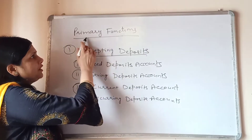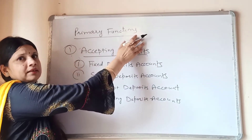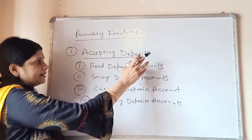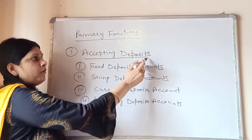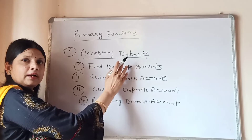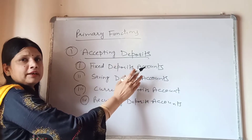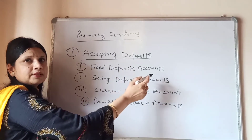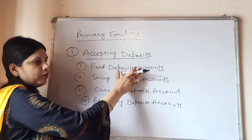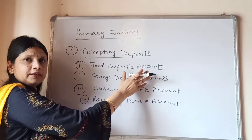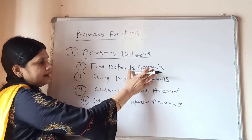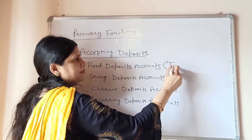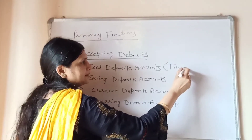The first primary function is accepting deposits. A customer can deposit in the bank in various forms. The first type is fixed deposits. When an amount is deposited for a fixed time period, this is known as fixed deposits — also called time deposits. The rate of interest on fixed deposits is higher than other accounts.